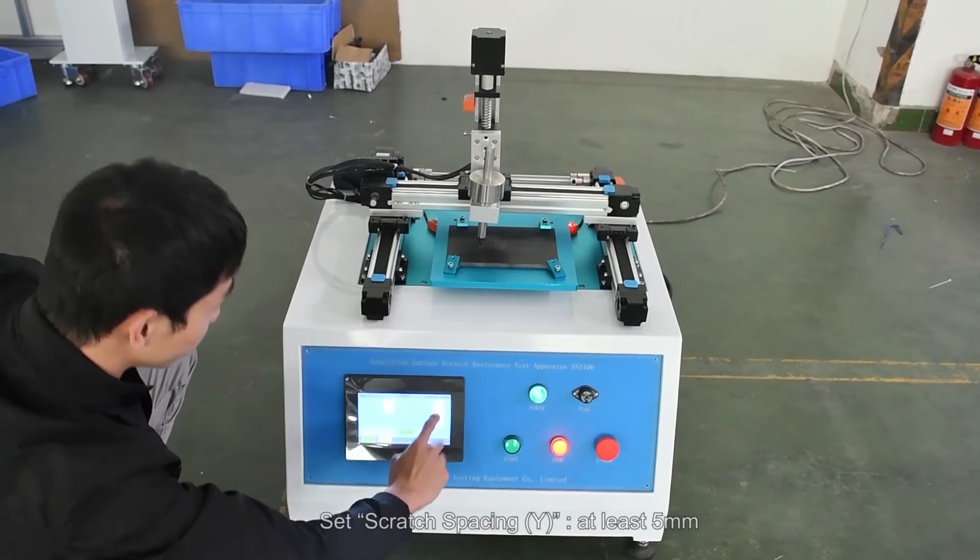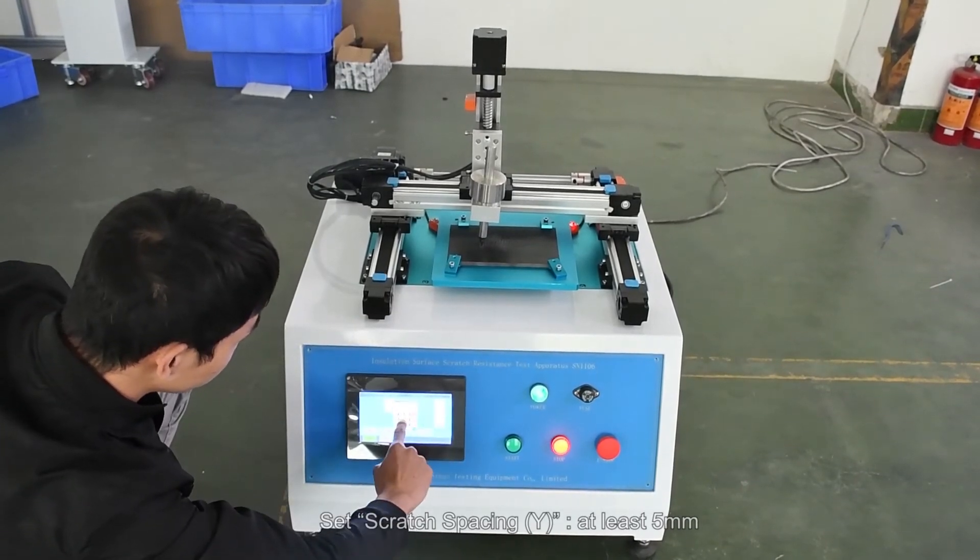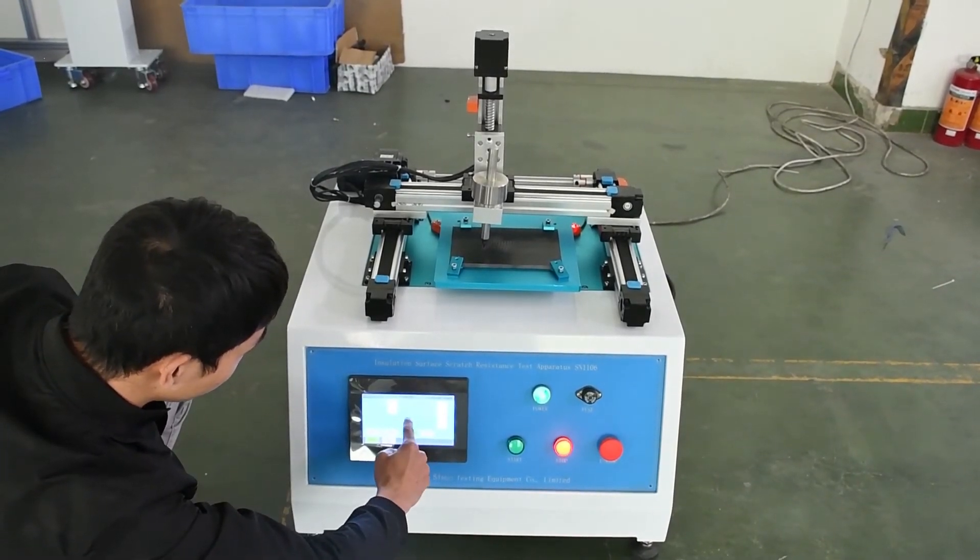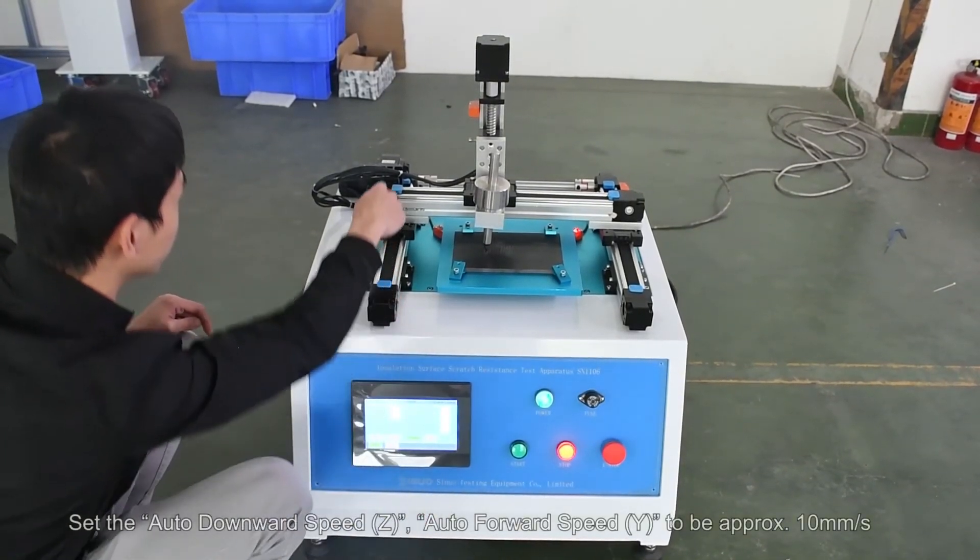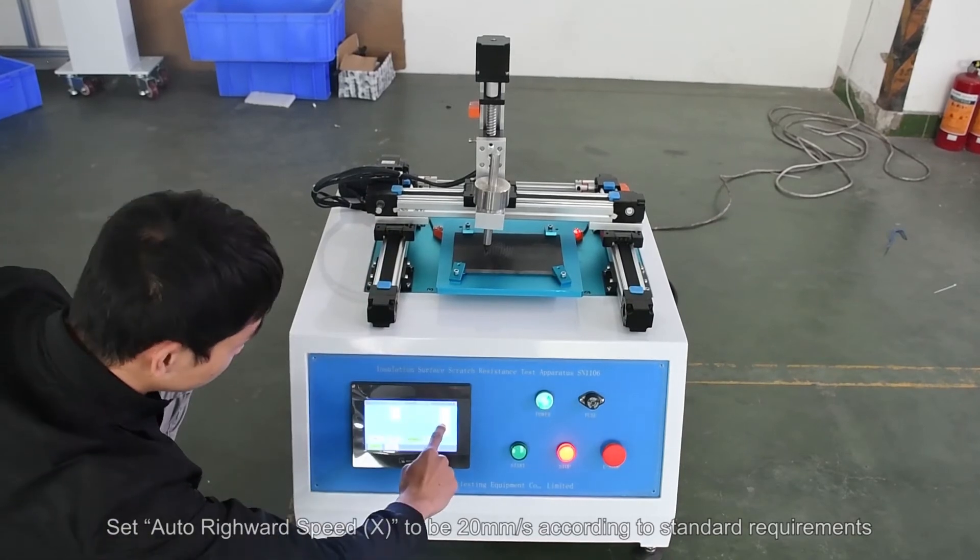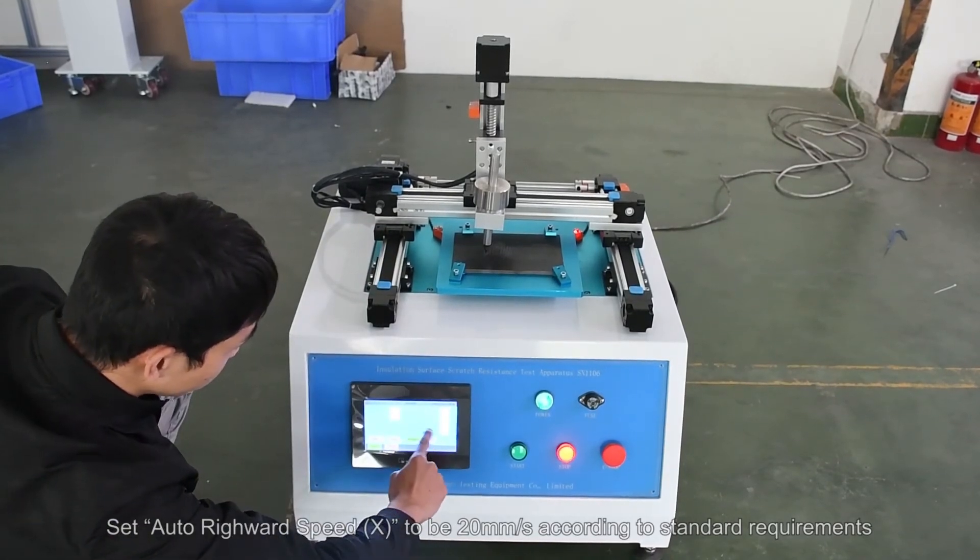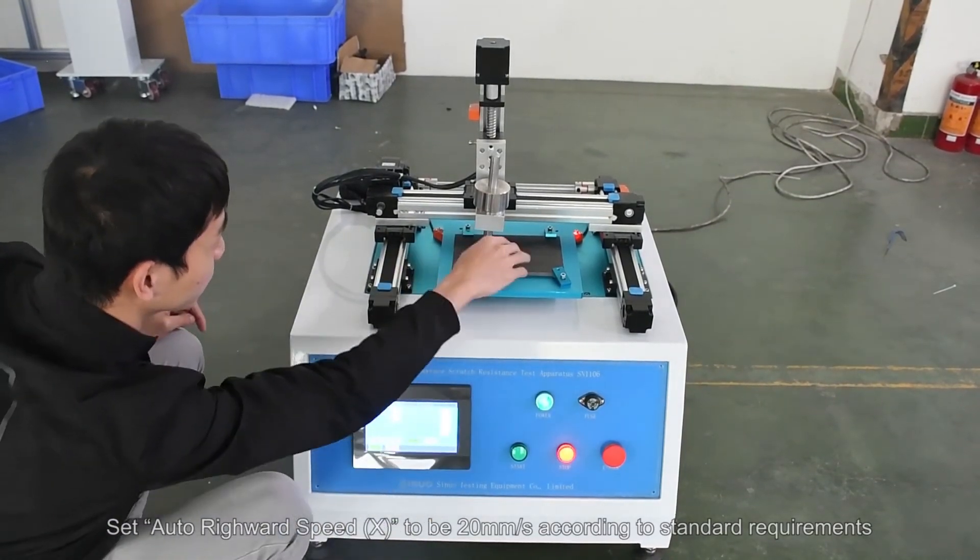Set scratch spacing Y at least five millimeters. Set the auto downward speed Z and auto forward speed Y to be approximately 10 millimeters per second. Set auto reward speed X to be 20 millimeters per second according to standard requirements.